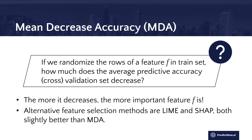There are other feature selection methods such as LIME and SHAP. They are readily available, and they also perform slightly better than MDA in some respects.